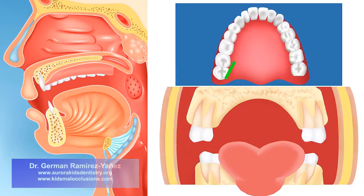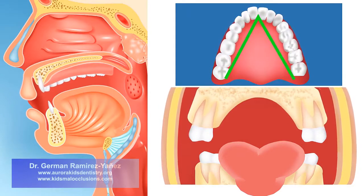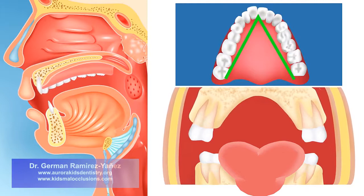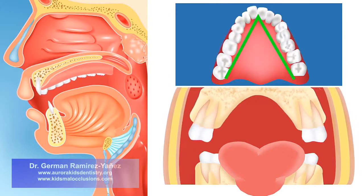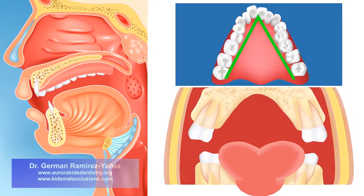The upper dental arch acquires a V-shape instead of being a rounded dental arch. Therefore, your teeth do not have space to properly align. This also produces an incorrect swallowing function.